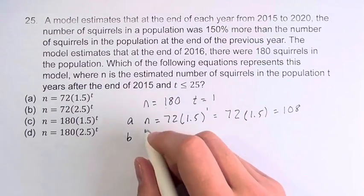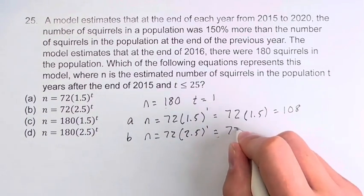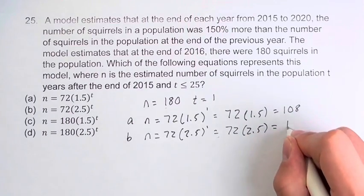For b, n is equal to 72 times 2.5 to the 1, which is just 72 times 2.5 and this actually is 180.